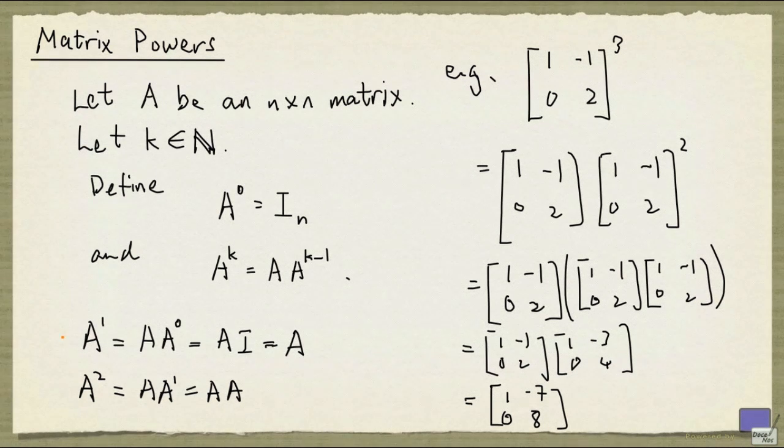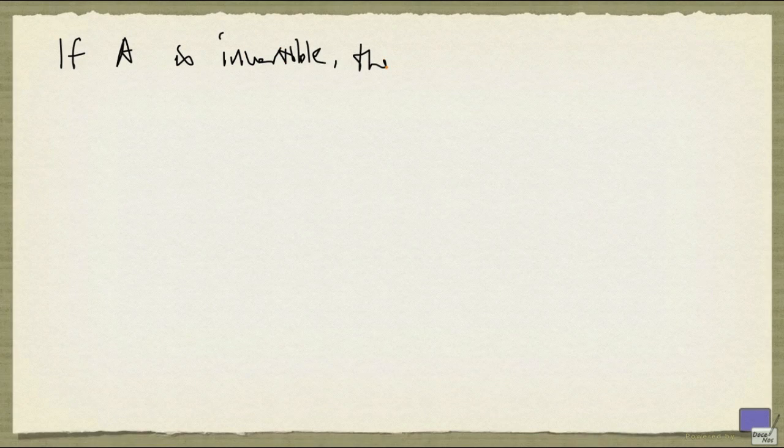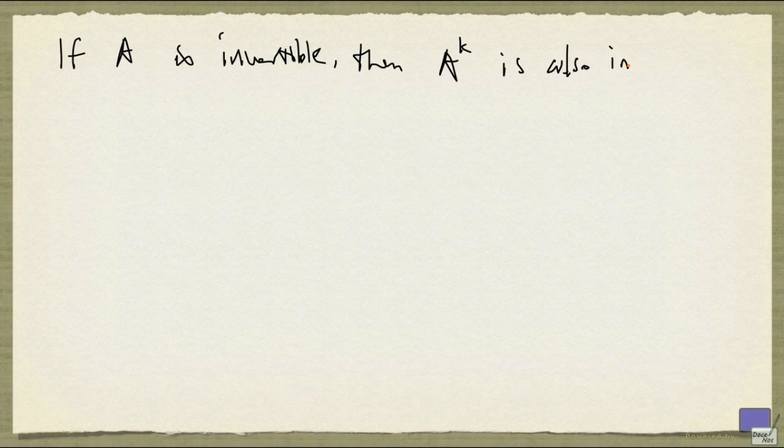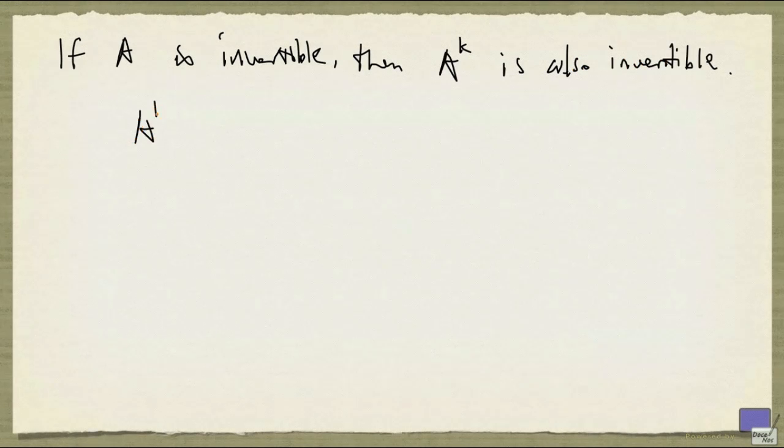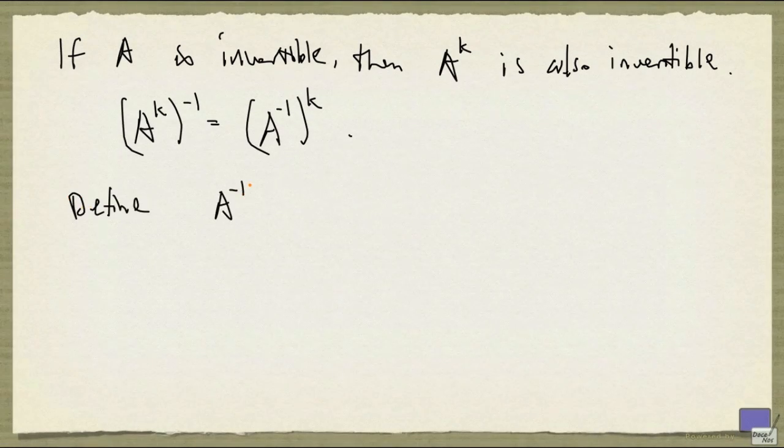Now we can also define negative powers. If A is invertible, then A to the power k is also invertible. And the inverse of A to the power k is given by A inverse to the power k. And so we can define A to the negative k to be simply the inverse of A to the power k.